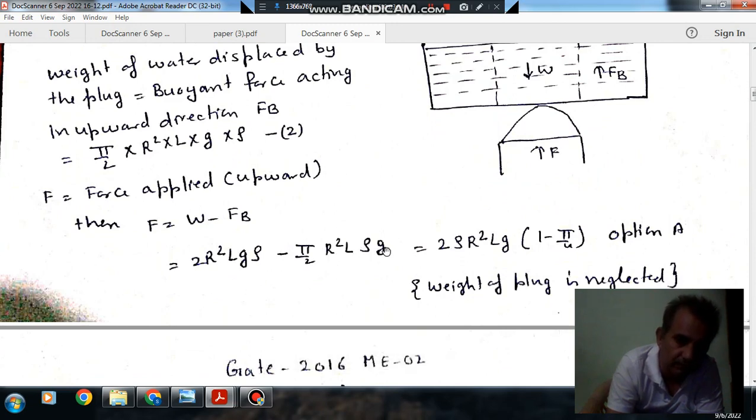W is 2R²LGρ and FB is (π/2)R²LρG. So 2R²LG × ρ, if we factor it, is (1 - π/4). This matches option A.